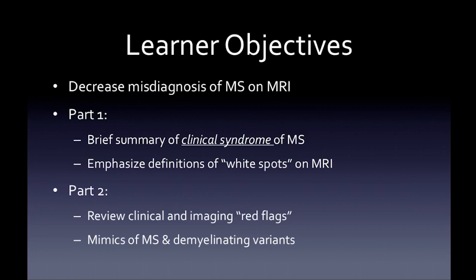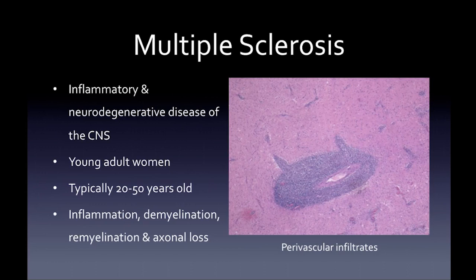The objectives for this first talk: overall, we're going to try to decrease your misdiagnosis of multiple sclerosis on MRI. For this first part, we'll do a brief summary of the clinical syndrome of multiple sclerosis and then emphasize the definitions and locations of white spots on MRI.